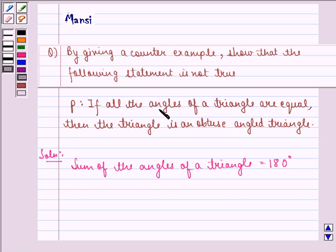Now if all the angles of the triangle are equal, then each angle will be equal to 180 degrees divided by 3, that is equal to 60 degrees.